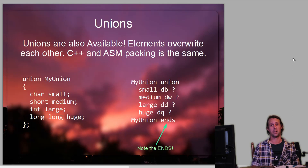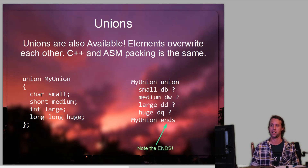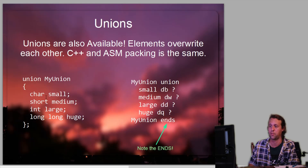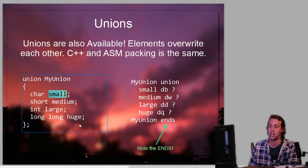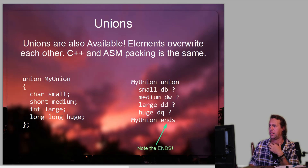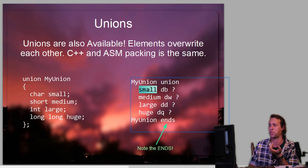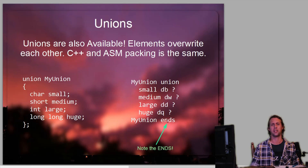Moving on to unions. Unions are very similar to structures, except that all of the data takes up the same space or has the same address — reusing the same RAM for multiple different data types. In C++ a union with a character, a short, an int, and a long long 'huge' will actually only take up eight bytes, and all of those values will have the same address — if you write to one, it changes all the values. A union in assembler is much the same: the union name, then the union keyword, then data types — small DB, medium DW, large DD, huge DQ. One syntax note: it's still 'ends' at the end of a union, not 'enu'.